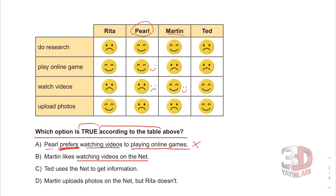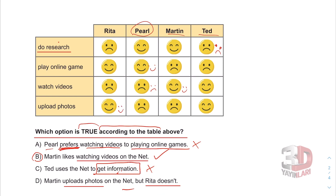Option B: Martin likes watching videos on the net. Let's see Martin — watching videos, yes he does prefer watching videos. This is true, the answer is B. Option C: Ted uses the net to get information. Ted doesn't like doing research, so this is not true. Option D: Martin uploads photos but Rita doesn't — actually Rita does upload photos and Martin doesn't. That's the opposite. The answer is B.